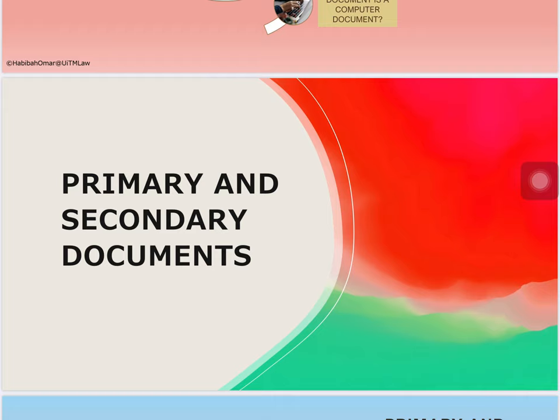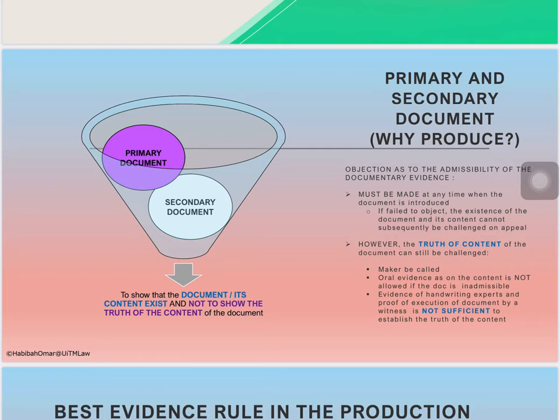If you recall last time, primary evidence is basically defined as evidence that can provide you with greater certainty of facts. Any evidence that can provide greater certainty of facts can be regarded as primary evidence. For example, in a case of killing, a knife with the fingerprint and DNA of the accused person and the victim, if tendered as evidence in court, is tendering it as primary evidence. In the context of documentary evidence, Sections 61, 62, and 63 talk about primary evidence and documentary evidence.